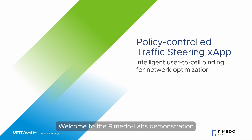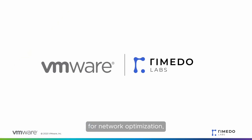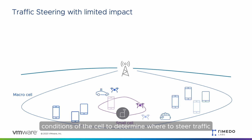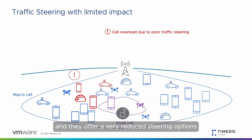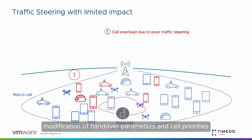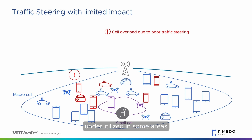Welcome to the Remedo Labs demonstration: policy-controlled traffic steering X-App for network optimization powered by VMware Distributed RIC. Current traffic steering mechanisms primarily use radio conditions of the cell to determine where to steer traffic, and they offer very reduced steering options, mostly limited to cell reselection, modification of handover parameters, and cell priorities. Communication service providers, or CSPs, adopting these traffic steering methods discover their network to be either underutilized in some areas or dangerously overloaded in others.